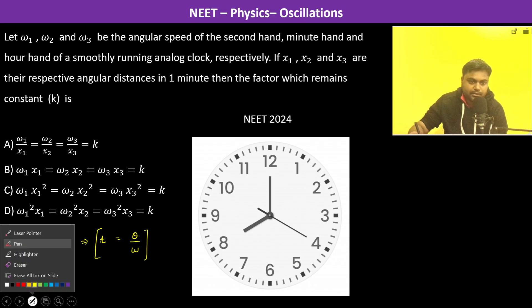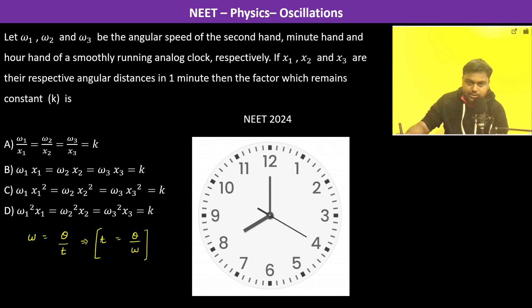We will be having this minute hand going here - in one minute the hour hand moves very little, and the second hand has done a full circle in one minute, it has come back here. So the time taken is the same for all, but they have covered different angular displacements due to different angular speeds.